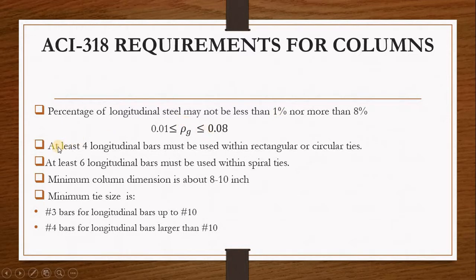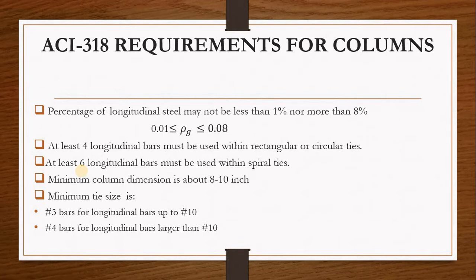The second requirement is that at least four longitudinal bars must be used within rectangular or circular ties. So when you design your column, you need to make sure you provide four longitudinal bars, whether it's a rectangular, square, or circular column. The third requirement is that at least six longitudinal bars must be used within spiral ties — this is for circular columns.